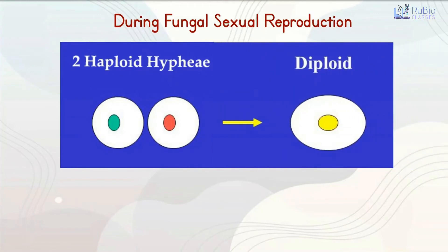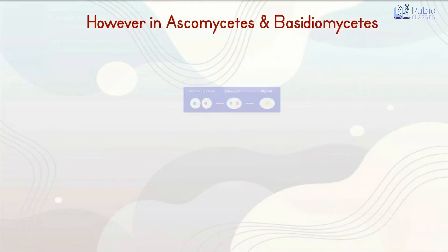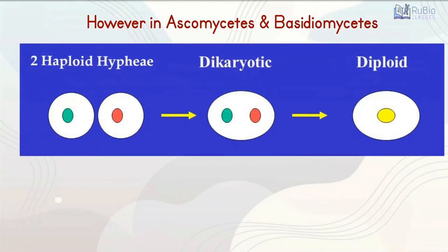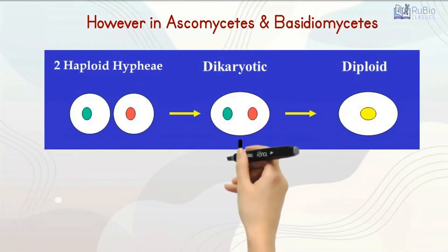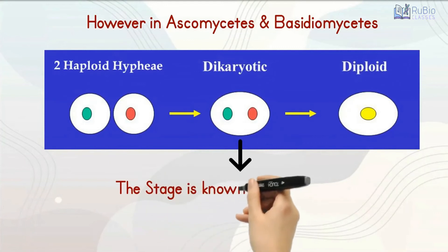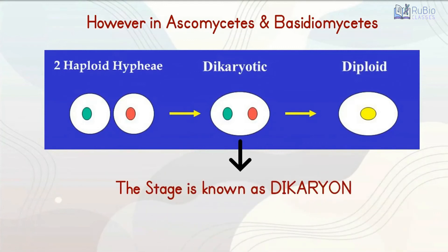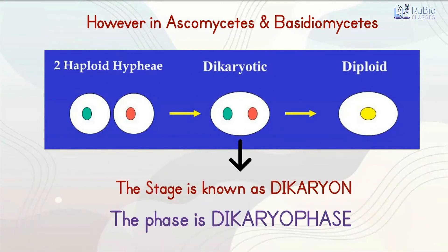However, in ascomycetes and basidiomycetes, an intervening dikaryotic stage occurs, called a dikaryon, and the phase is called the dikaryophase.